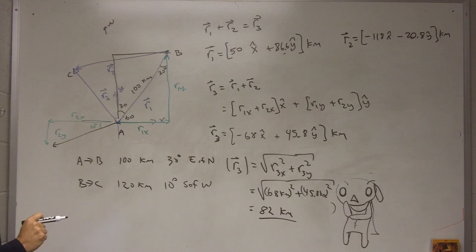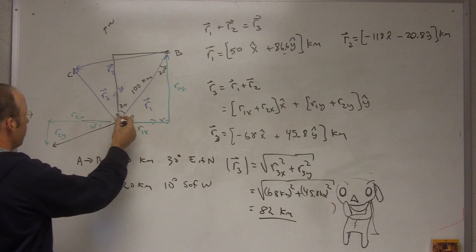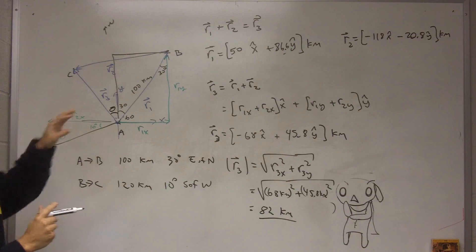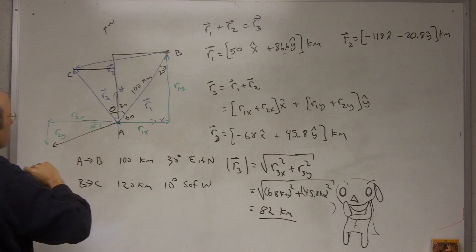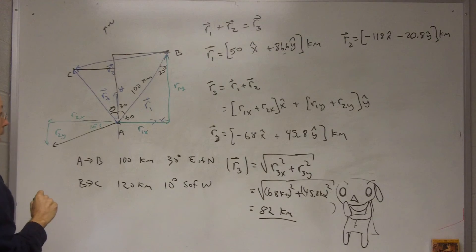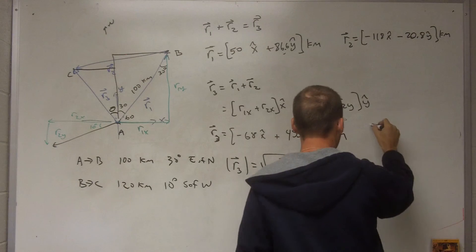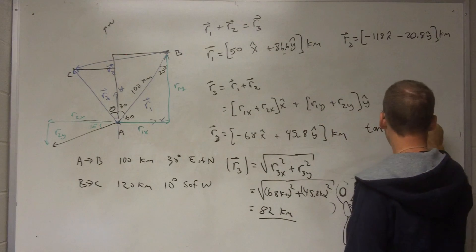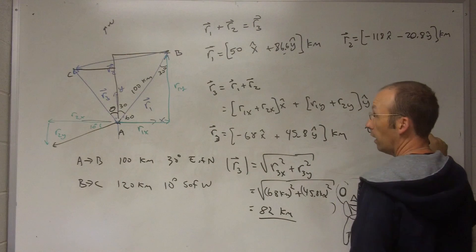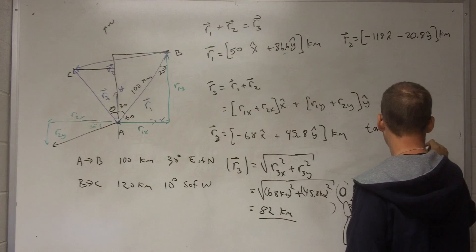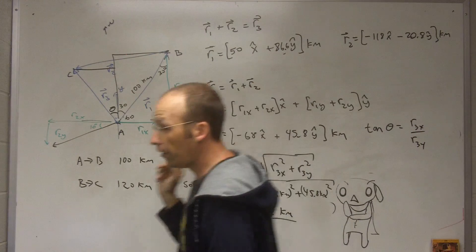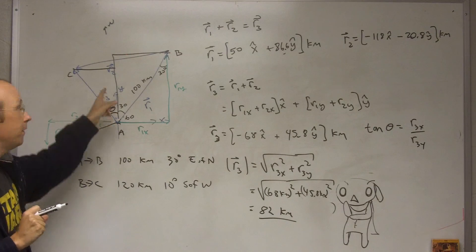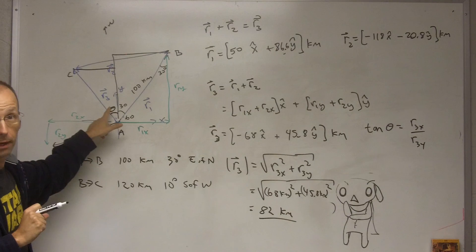What direction would that be in? Well, let me find this angle right here, theta. So if that's my vector, then this is the x component and that's the y component. And I know from my trig that tangent of theta is going to be opposite over adjacent. So it's going to be r3x over r3y.